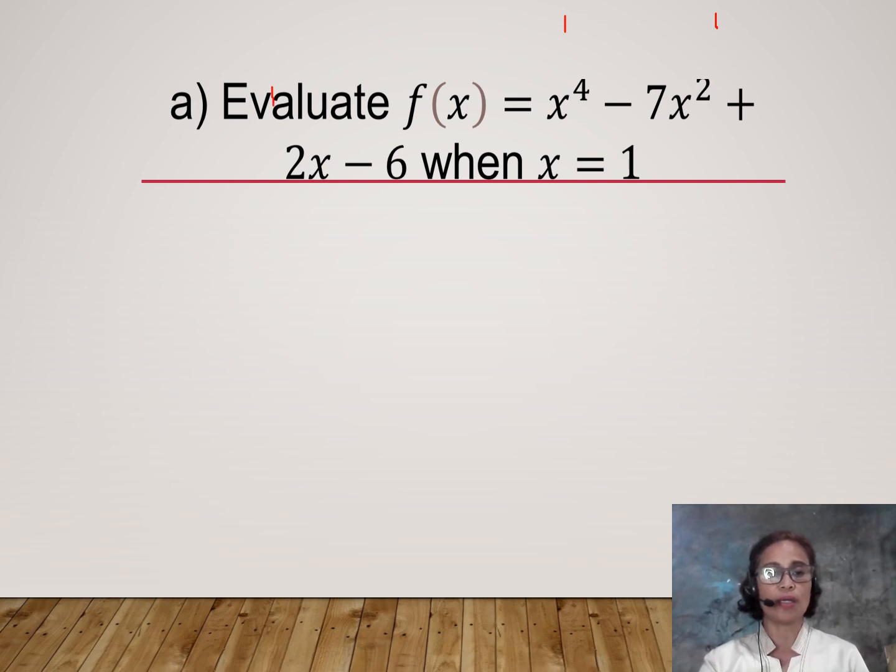Then we are now going to solve f(1). So x to the fourth will become 1 raised to the fourth power minus 7 times 1 raised to the second power plus 2 times 1 minus 6.